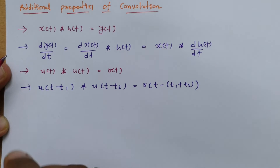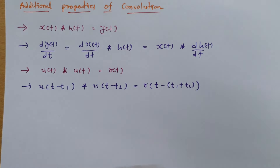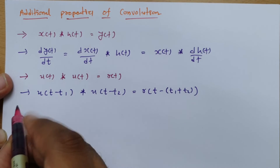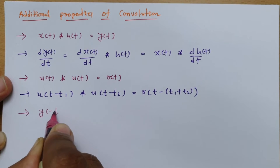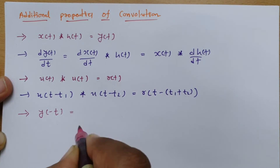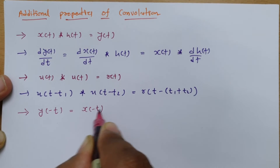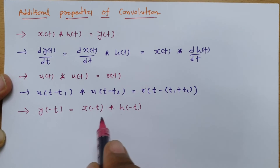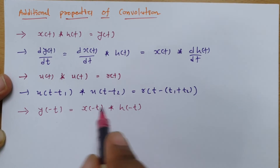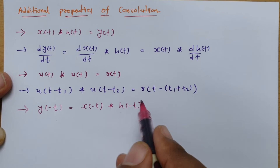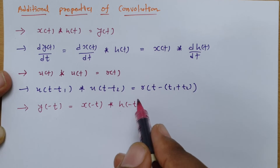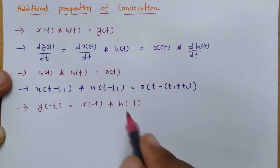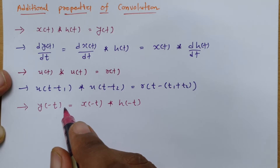Another important property involves the image, or time-reversal. As stated, x(t) convolved with h(t) equals y(t). If you want y(−t), then you must apply the time-reversal to both signals: x(−t) convolved with h(−t) gives y(−t). The time-reversal must be applied to all signals — you cannot apply it to only one signal. It must be applied to all signals involved.